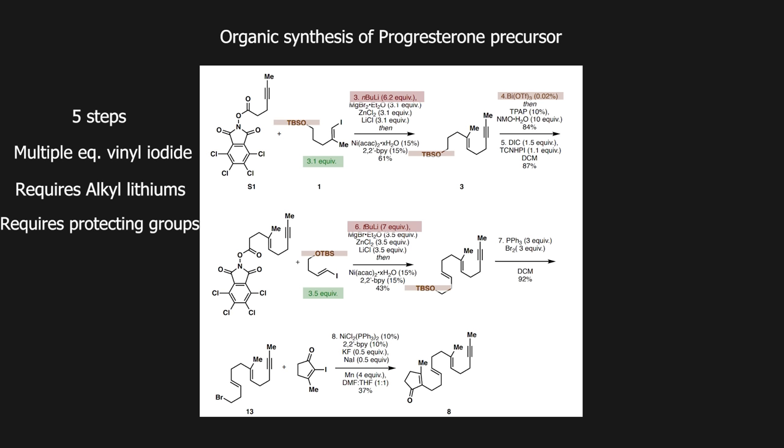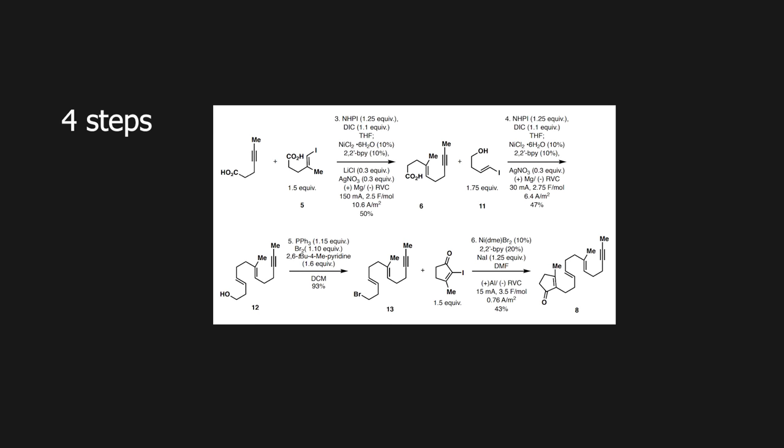If we instead decide on synthesizing this precursor using synthetic organic electrochemistry, we can reduce the amount of steps to four and replace three of them with an easy electrochemical procedure. By one simple high-yielding transformation, it's kept the same. We can already see with this simple comparison that electrochemistry can simplify many complex, inefficient, or even dangerous syntheses.